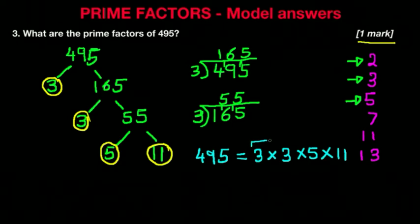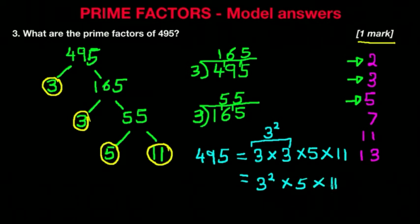Now we can simplify this. We've got two 3s, so we can write this down as 3 to the power of 2. Therefore the answer becomes 3 squared, or 3 to the power of 2, times 5 times 11. Because of all the workings out involved, there is a possibility this could be a 2-mark question. If you show the workings out and get the right answer, you will get both marks.